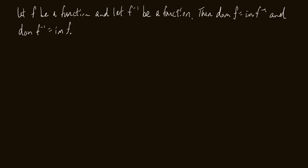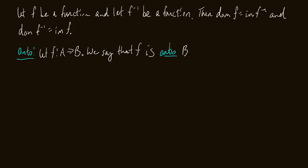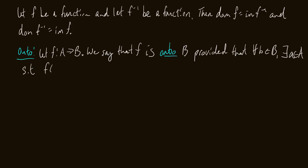Now let's move to another definition. We spoke about one-to-one; now I want to talk about what it means to be onto. Let f be a function mapping A to B. We say that f is onto B provided that for all little b in the set B, there exists an a in the set A such that f(a) = b. In other words, the image of f equals B.